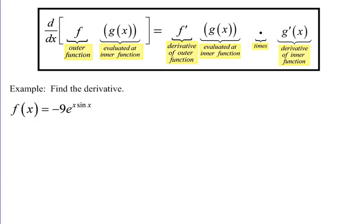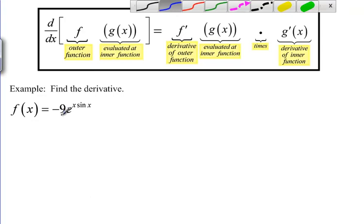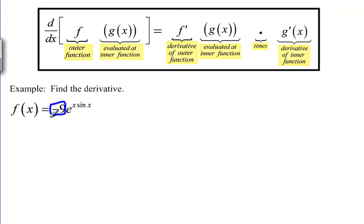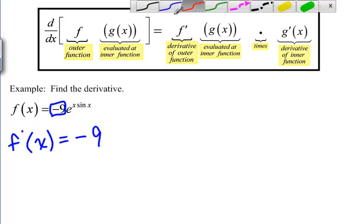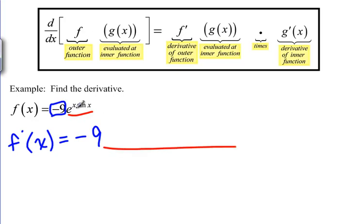Now we'd like to see how we use the chain rule in conjunction with some of the other rules we've learned already, like the product rule and the quotient rule. In the example we're looking at here we have negative 9 times e to the x sine of x. The negative 9 we can bring out front and sort of ignore, because a constant times any function — the derivative will just have that constant in front times whatever the derivative of the rest of it is.